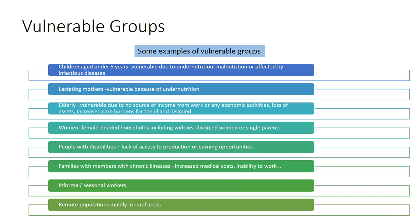Children aged under five years are vulnerable because of undernutrition, malnutrition, or infectious diseases. Mothers can also be vulnerable because of undernutrition, especially pregnant mothers, who tend to be highly vulnerable if they don't get the medical services needed. These vulnerable groups will be most affected by shocks or stressors.